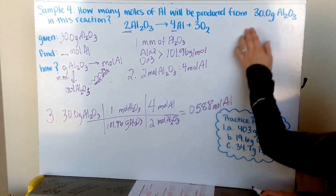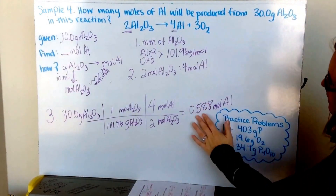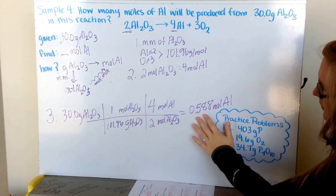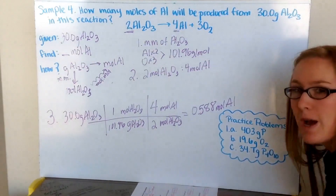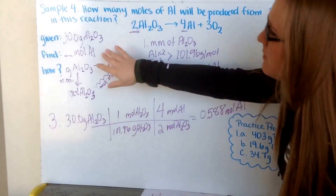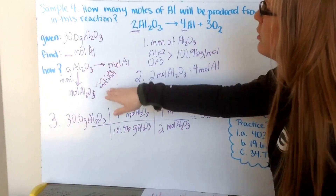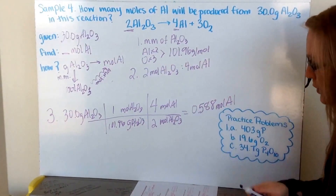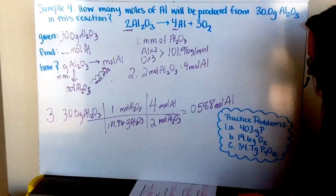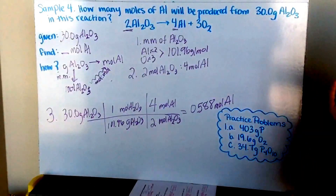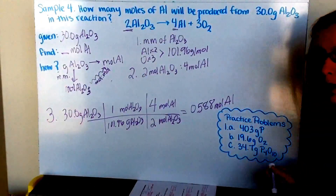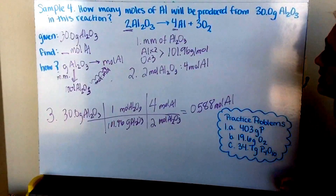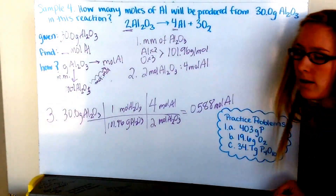I started with three significant figures, so my final answer also needs three significant figures: 0.588 moles of aluminum. Follow these same steps — given, find, and how you're going to get there by mapping it out — to go ahead and do your three practice problems. Your answers are listed here; work through the steps I've given you and use them as a tool to find the correct answer.